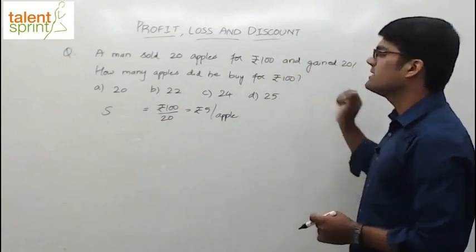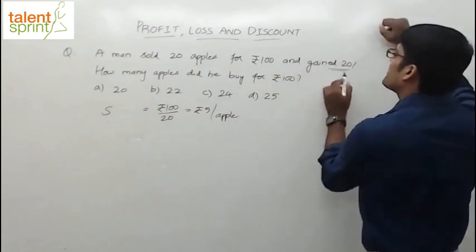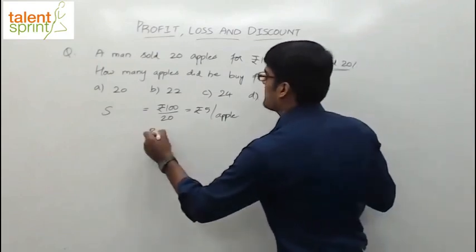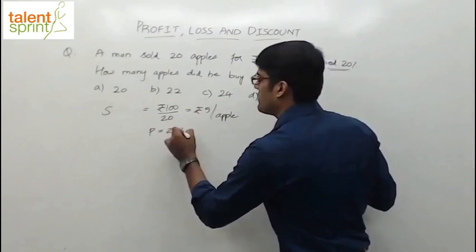Now how many apples did he buy for Rs.100? We know that the profit is 20 percentage, gain is 20 percentage. Now you know the selling price and you know the profit. Profit is how much? 20 percentage. Can you find out the cost price?